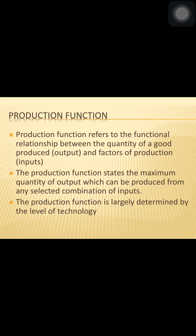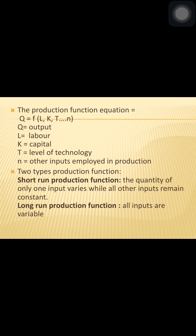The production function can be expressed in an equation in which the output is the dependent variable and inputs are the independent variables. K is equal to capital, T is equal to level of technology, and other employees employed in production. It is important that Q is equal to output, which is a function of factors of labor, capital, level of technology, and other inputs.